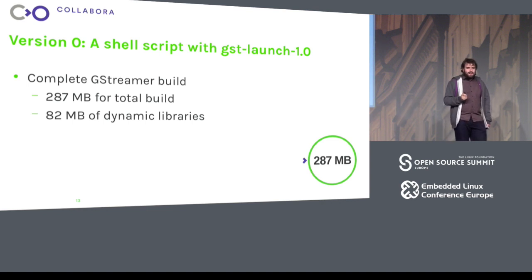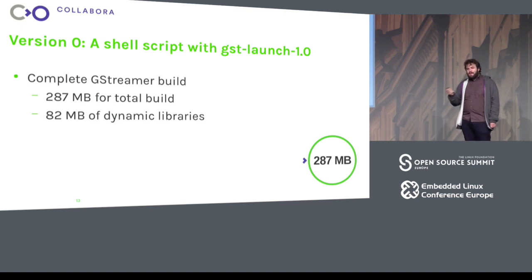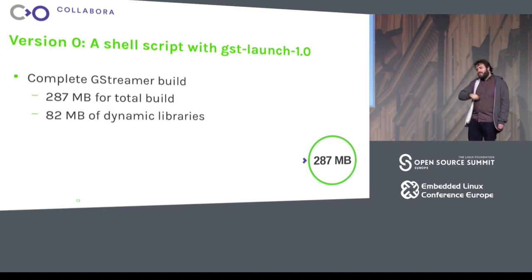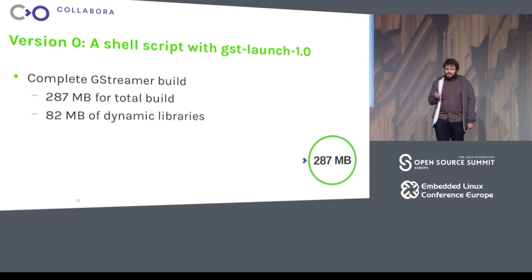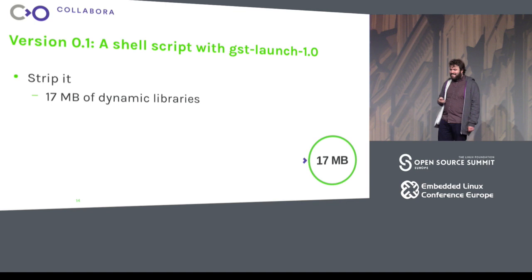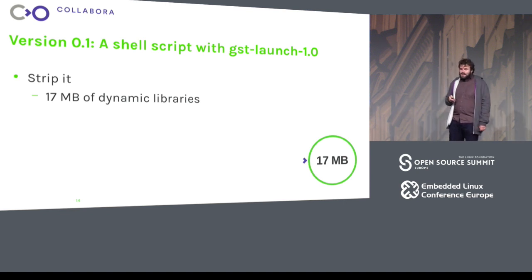How do you run this on an embedded device? First idea: just build GStreamer and put it on the device. So just for this talk, I built a clean GStreamer with almost none of the optional dependencies. My build was 287 megs, and 82 megs of those were dynamic libraries. Then I stripped it — that was with debug symbols — and we're down to 17 megabytes. Not so bad, but it will not fit on my device.